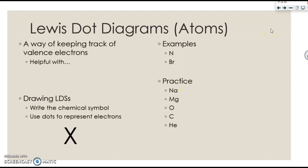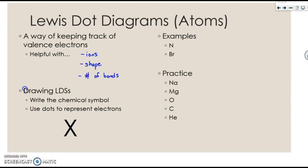Let's kind of come back to these Lewis dot diagrams. We briefly mentioned them earlier on in the chapter. A Lewis dot diagram is a way of keeping track of your valence electrons. They can be helpful in us determining what ion would exist. They're going to be helpful in identifying the shape of something, and they can be really helpful in determining the number of bonds that something can make. When you draw a Lewis dot structure, you always write the chemical symbol first, and then you're going to use dots to represent electrons.